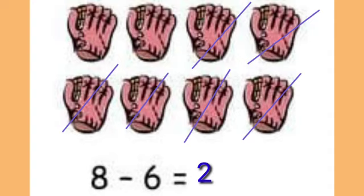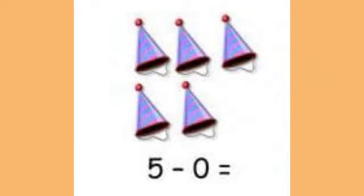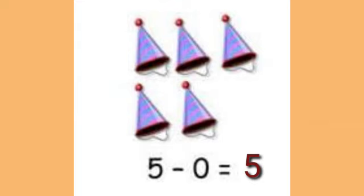See the last one. How many pictures are here? 1, 2, 3, 4, 5. Here given 5 minus 0 equal to dash. Any number minus 0 equal to that same number. So 5 minus 0 equal to 5. Likewise, practice in your home. Thank you children.